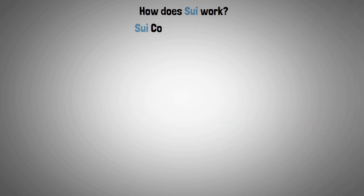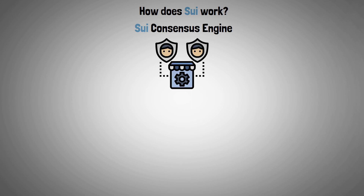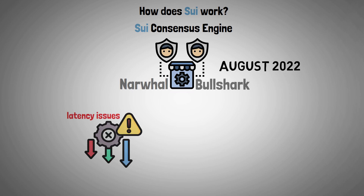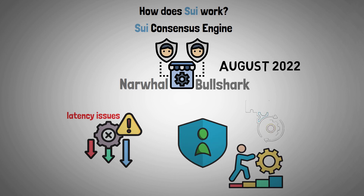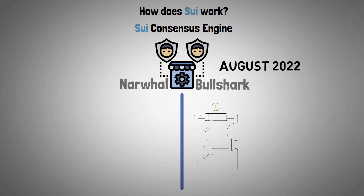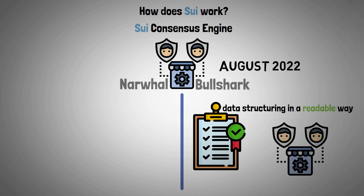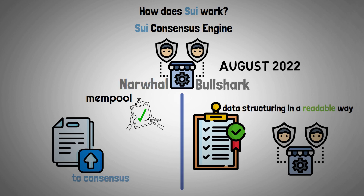Regarding the SUI consensus engine: SUI's default consensus algorithm was Narwhal and Tusk, but Bullshark replaced Tusk in August 2022. This reduced latency issues and ensured that validators with slower processing speeds could still contribute to the project. In short, Bullshark establishes the standard for data structuring in a readable way for the consensus engine, and Narwhal serves as a mempool to ensure that data submitted to the consensus is available.